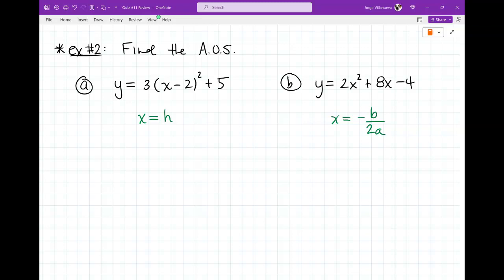So notice there are two formulas depending on the type of equation they give you. So for vertex form, it's just X equals H. So this one's like the easy one because all you got to do is identify H correctly, which might be tough if you don't remember. But what's my H value? It's a positive two. I know it says minus two, but remember H is always the opposite, right? So it's two and you're done. This is my answer. That's my solution.